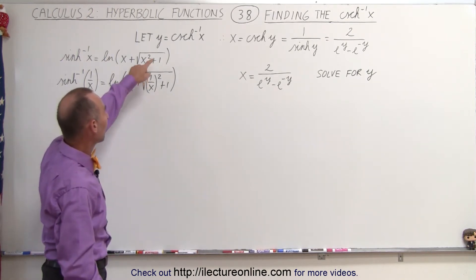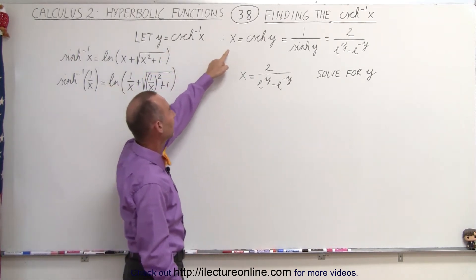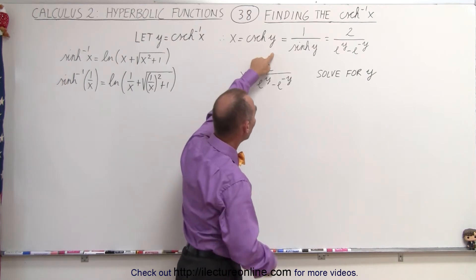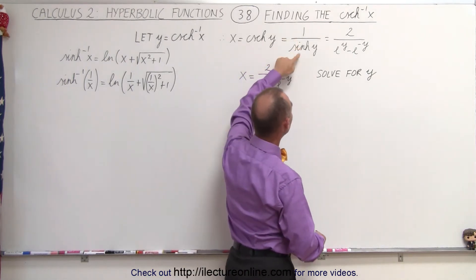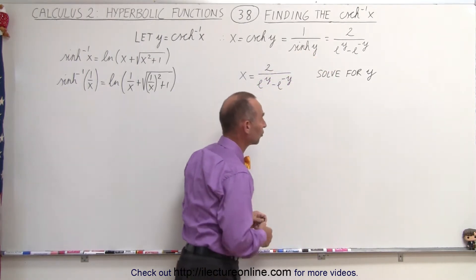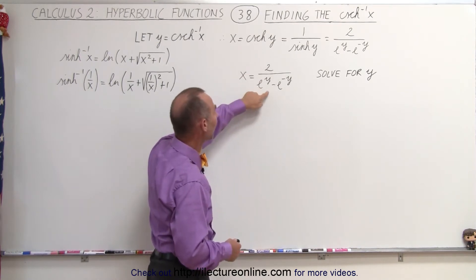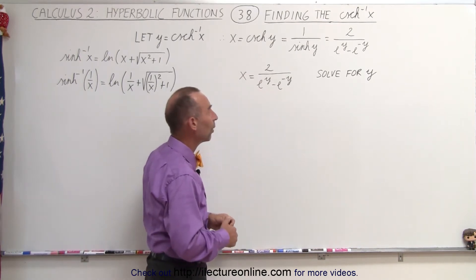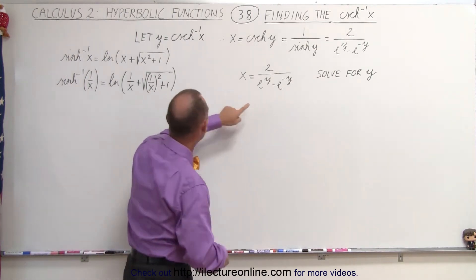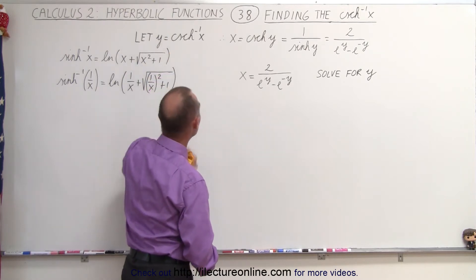We start out by calling y equal to the inverse hyperbolic cosecant of x. Therefore we can say that x equals the hyperbolic cosecant of y, which by definition is 1 over the hyperbolic sine of y, and then we can write that in terms of the exponentials. So x is equal to 2 divided by e to the y minus e to the minus y, and we need to solve that for y, because once we have it solved for y in terms of x, we will have an expression for the inverse hyperbolic cosecant of x.